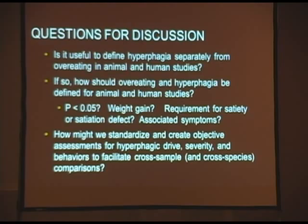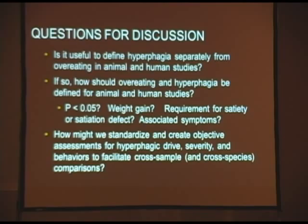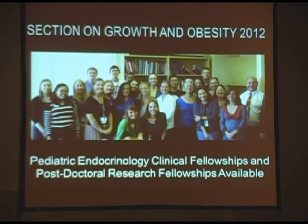Returning to questions in need of answers: Do you think it is useful to define hyperphagia separately from overeating in animal and human studies? If so, how should overeating and hyperphagia be defined? We can agree that overeating compared to a control group can always be defined statistically. Should overeating beyond normal weight trajectory be considered hyperphagic? Should there be a requirement for a satiety or satiation defect? Should there have to be associated symptoms? And how might we standardize and create objective assessments for hyperphagic drive, severity, and behaviors to facilitate cross-sample and even cross-species comparisons?